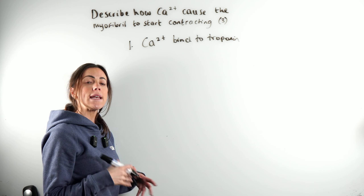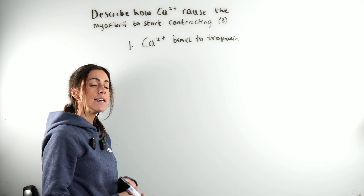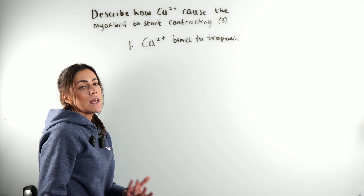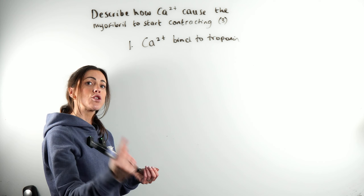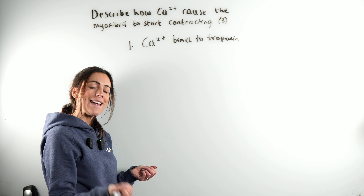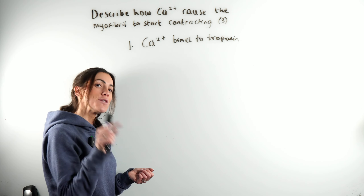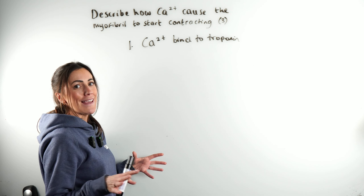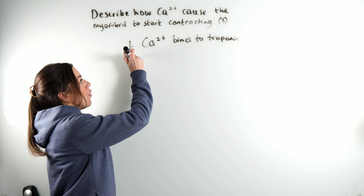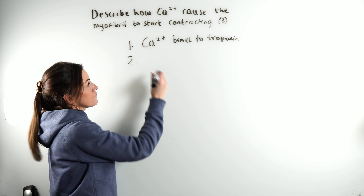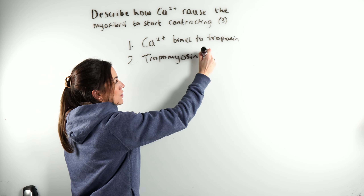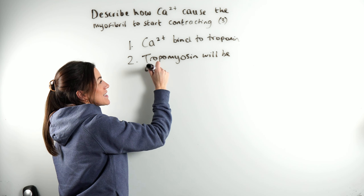Troponin is one of the proteins associated with the actin. The actin is the thin protein filament in the myofibril. Actin has tropomyosin wrapped around it with the globular troponin attached to the tropomyosin. So the calcium ions are going to bind to the troponin, which will cause the tropomyosin to move aside.